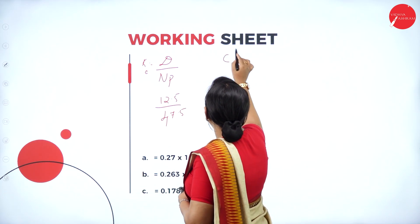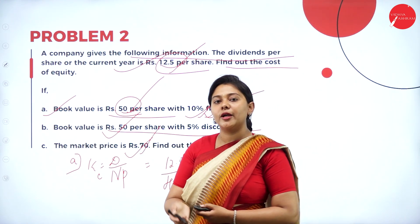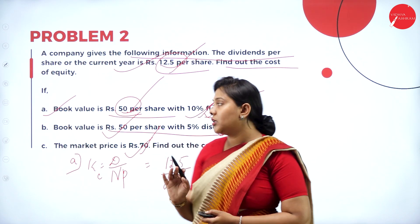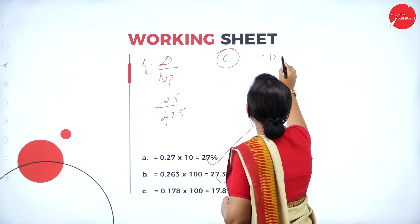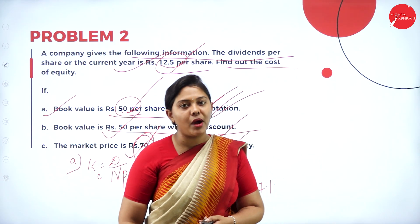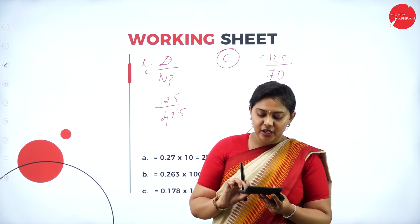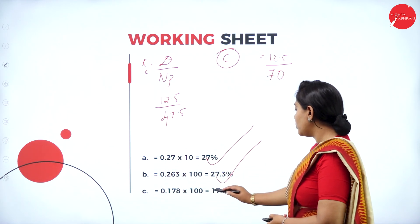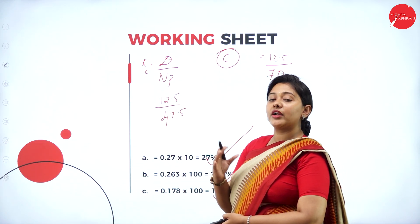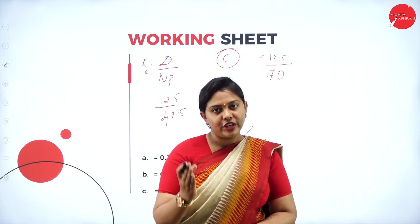Condition C: market price is rupees 70 per share. As stated, whenever market price is given, you must consider the market price. Cost of Equity = Dividend ÷ Market Price = 12.5 ÷ 70 = 0.1785, which is 17.8%. This is how you calculate cost of equity when market price is given, when issued at discount, and with flotation cost.